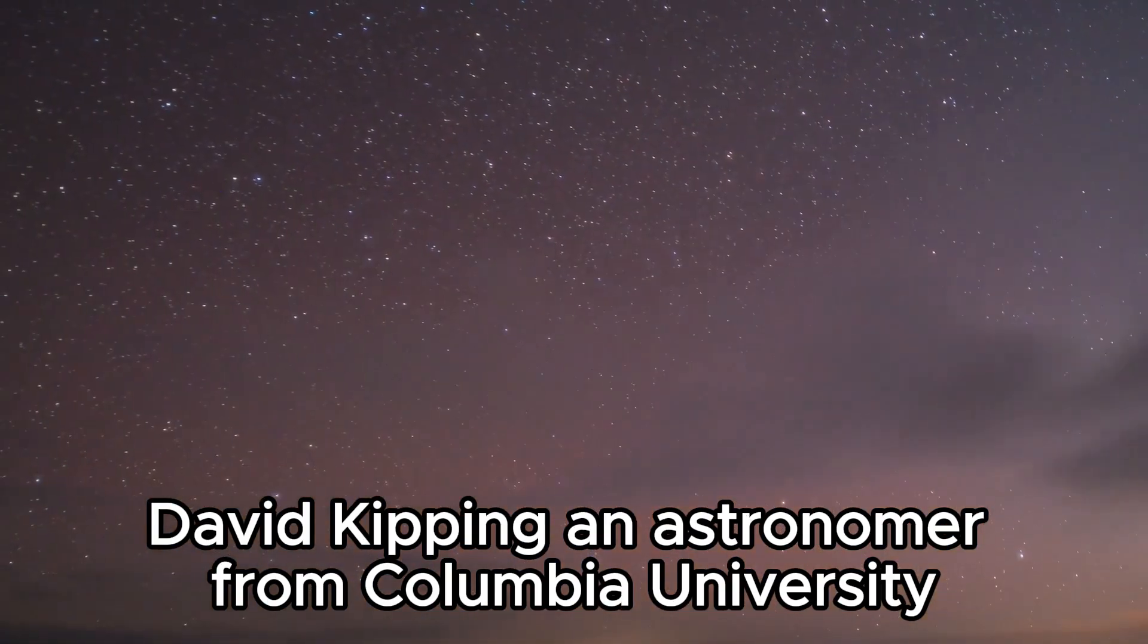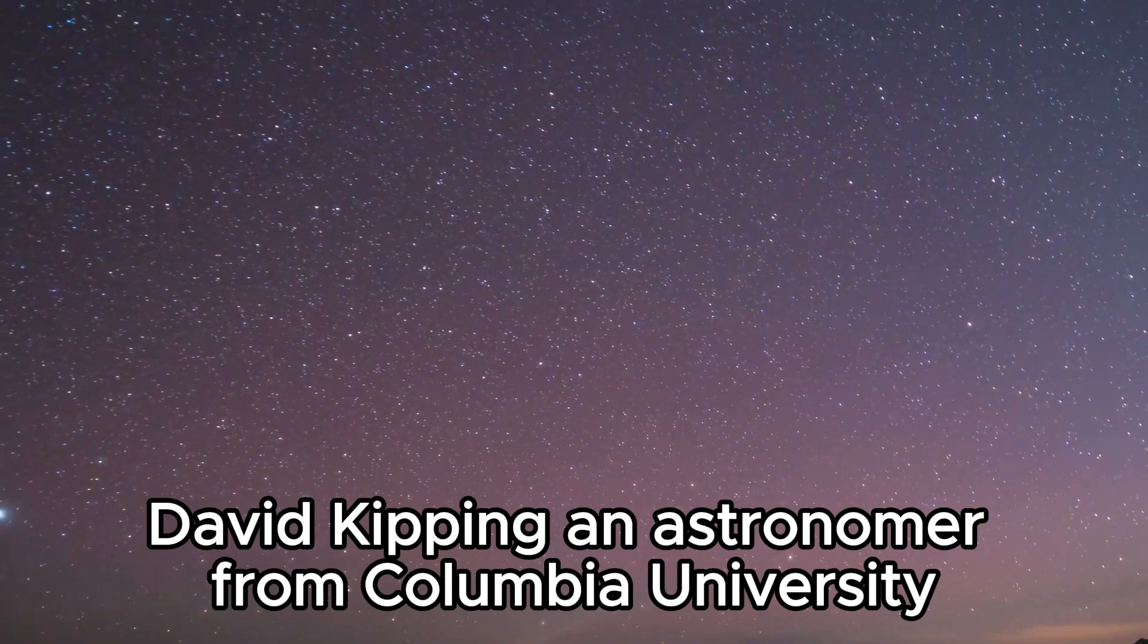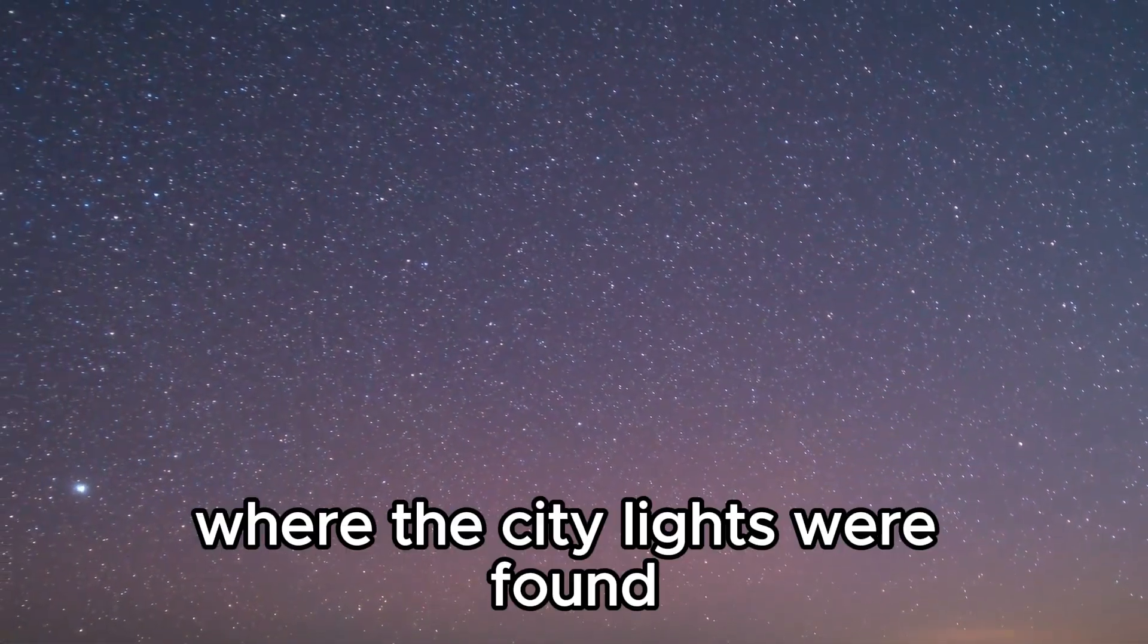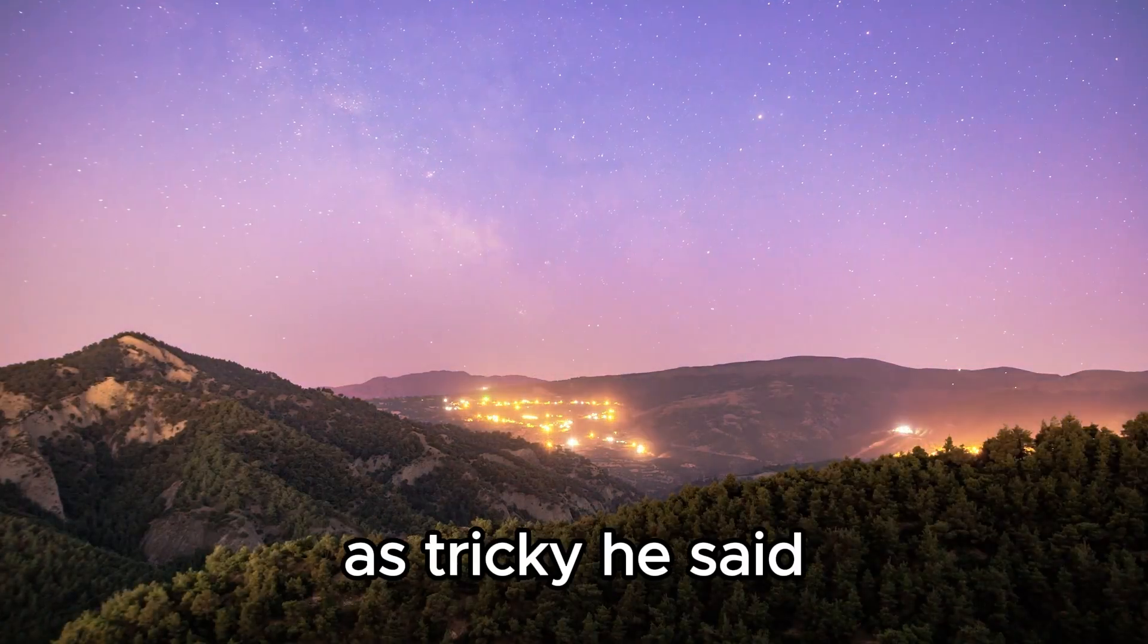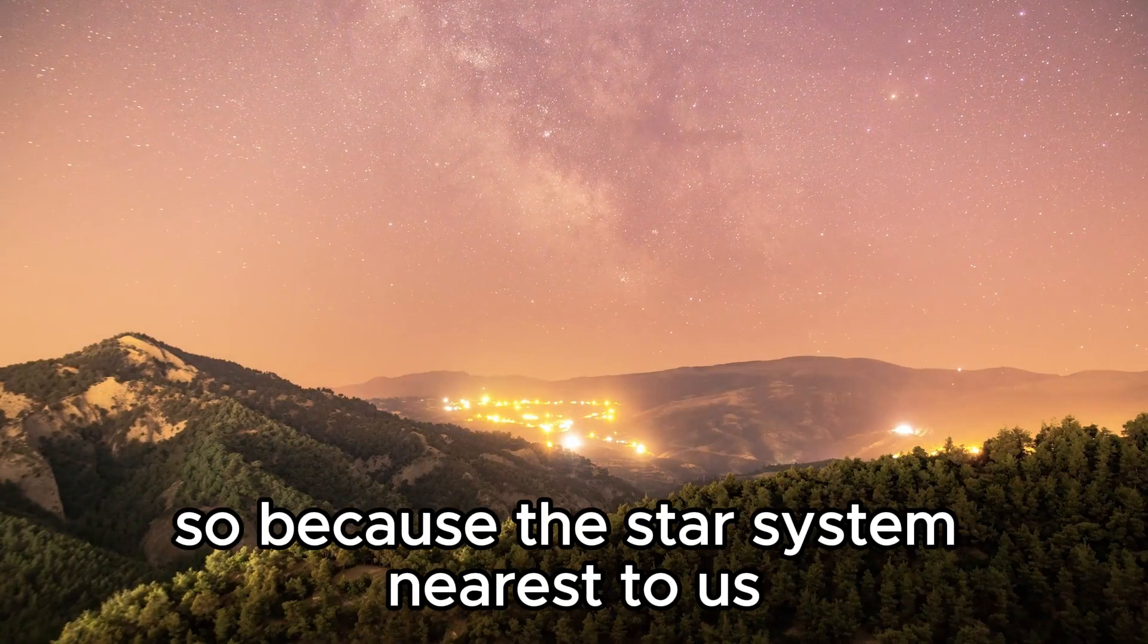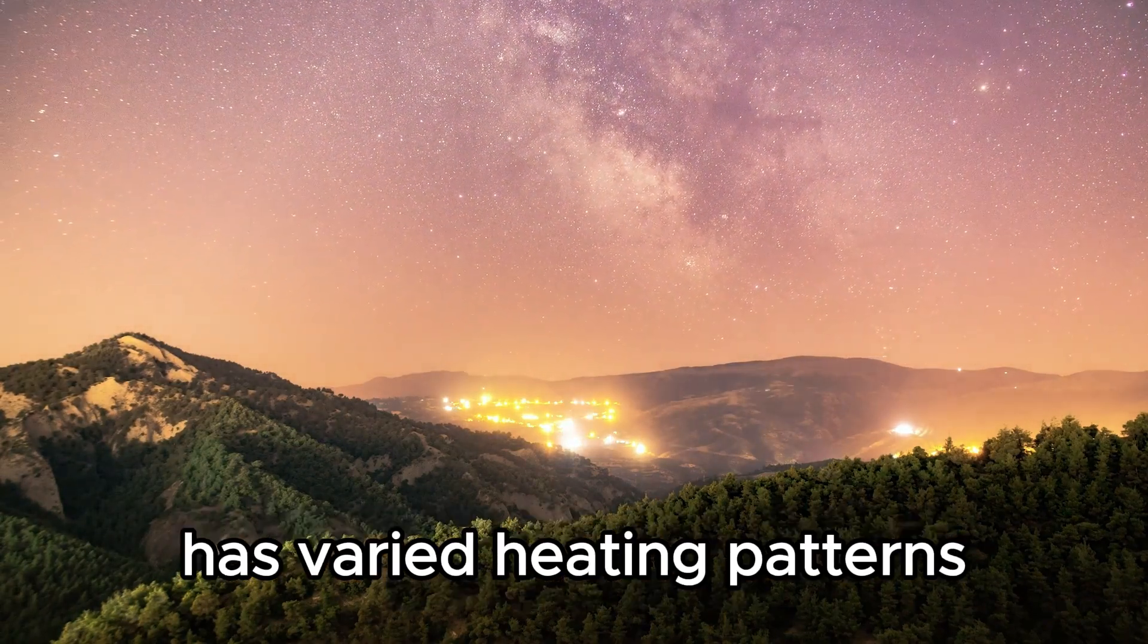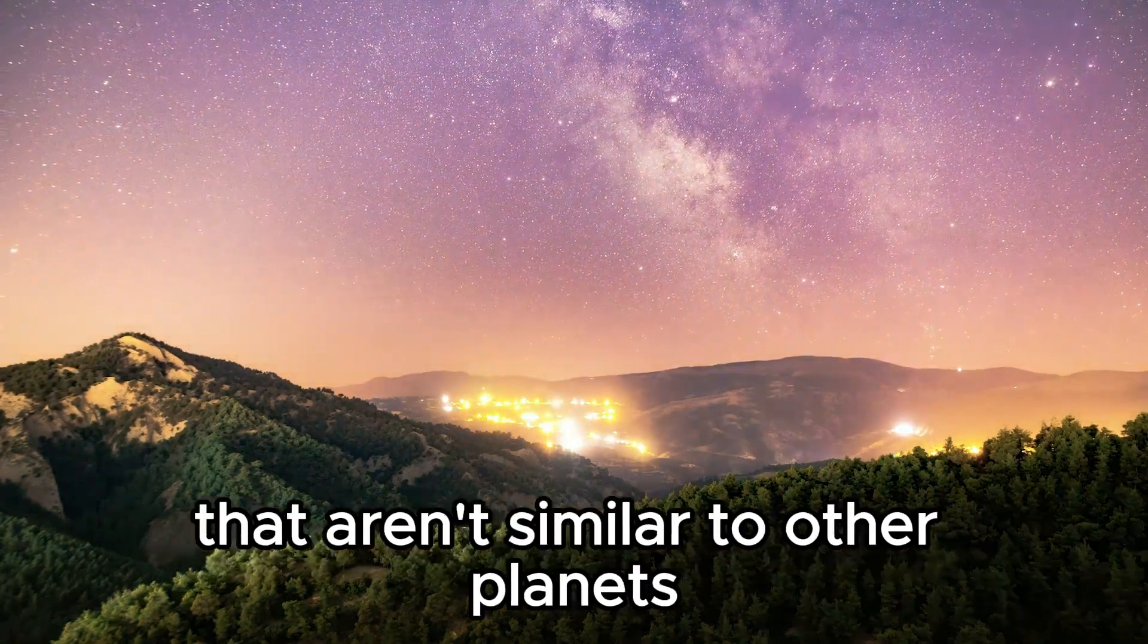David Kipping, an astronomer from Columbia University, describes the Proxima B exoplanet, where the city lights were found, as tricky. He said so because this star system nearest to us has varied heating patterns that aren't similar to other planets.